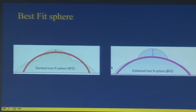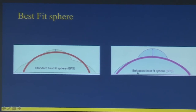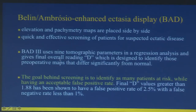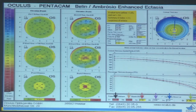There are two types of best-fit spheres: standard and enhanced. The enhanced best-fit sphere doesn't include the cone, whereas the standard best-fit sphere almost includes the cone. BAD (Belin-Ambrósio Display) is a screening tool with very good specificity and sensitivity.